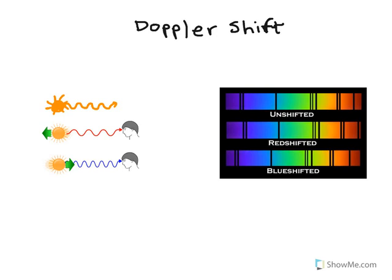However, it typically does not change the color that you observe, because things have to move close to the speed of light in order to see an actual change in color. In this case, we're looking at a star. When the star is at rest, it emits light at a particular wavelength. In this particular case, we're going to say it's a yellowish star, so most of the light is emitted in the yellow part of the spectrum.